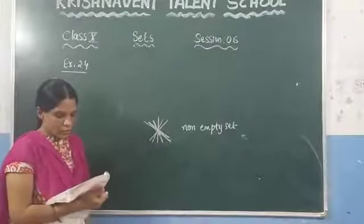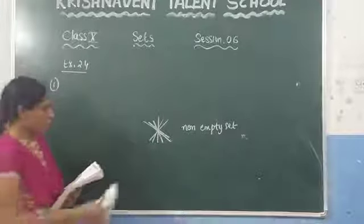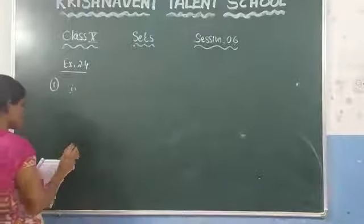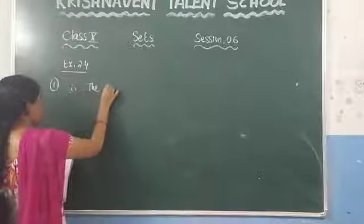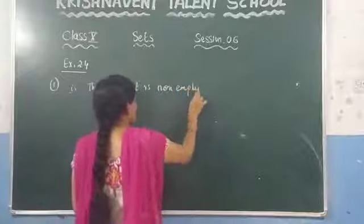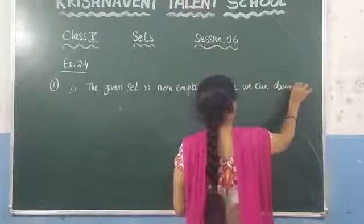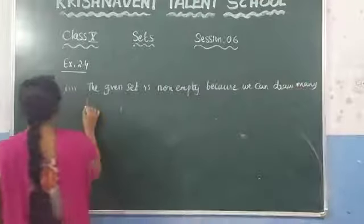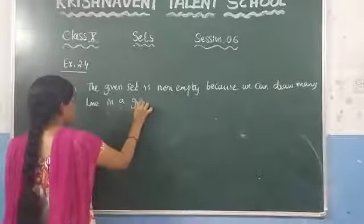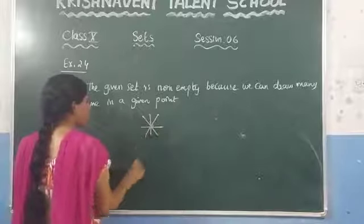See the second question: the set of odd natural numbers divisible by 2. Write the answer for the first question: the given set is non-empty because we can draw many lines through a given point. Now for the second question, you need to tell whether the set of odd natural numbers divisible by 2 is an empty set or not.